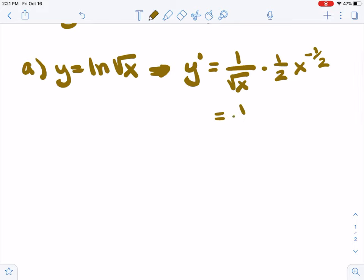We can clean that up a little bit. That's 1 over square root of x times 1 half times 1 over the square root of x. So that ends up being 1 over 2x.